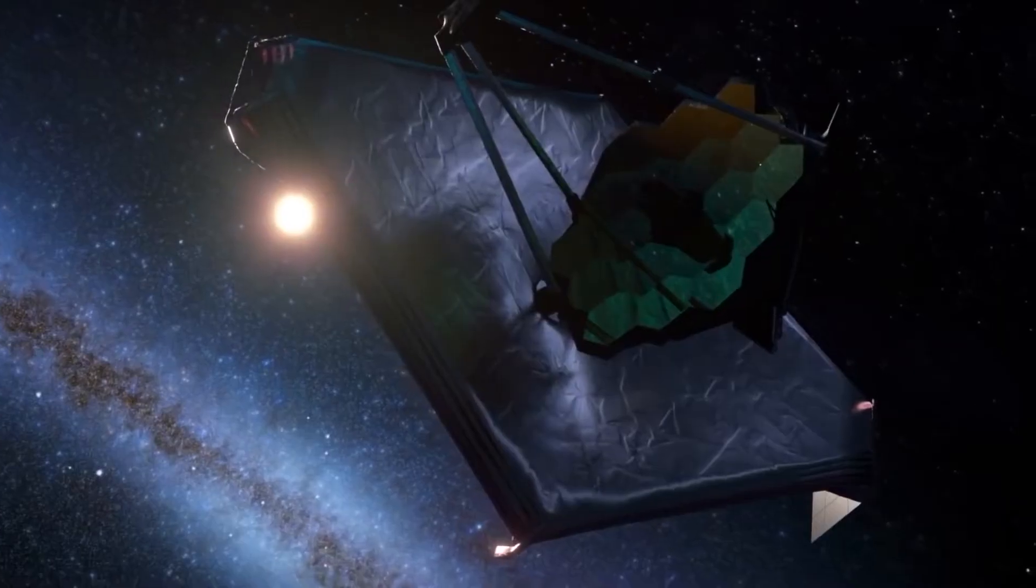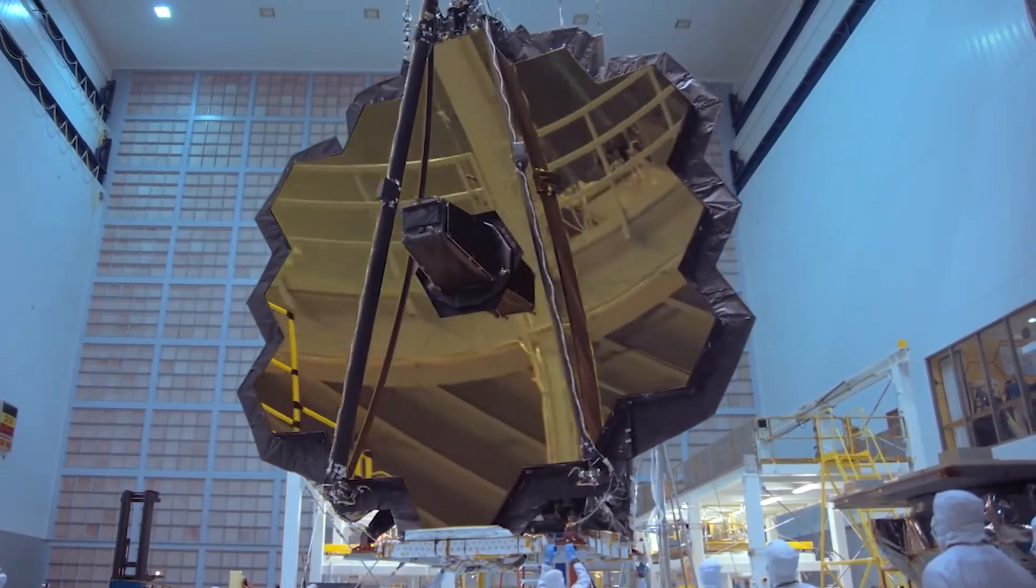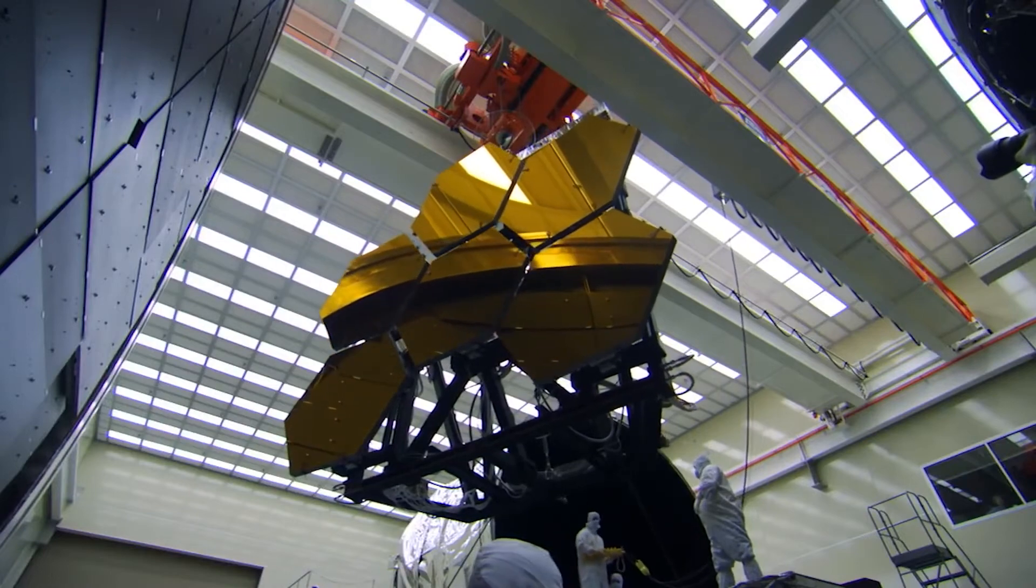Next, JWST's 6-meter-long, five-panel solar array, which generates around one kilowatt of power, is installed. The telescope can now run on its power rather than batteries.